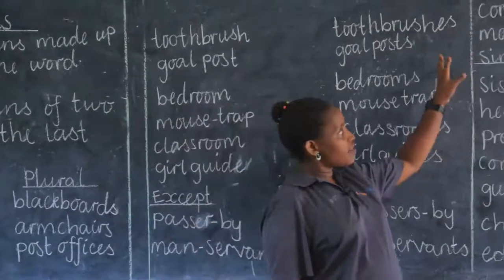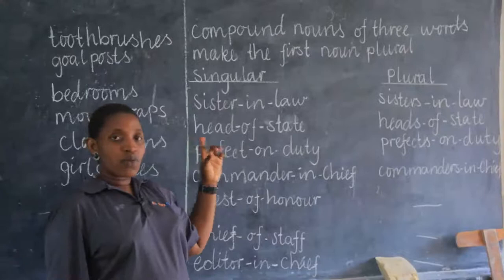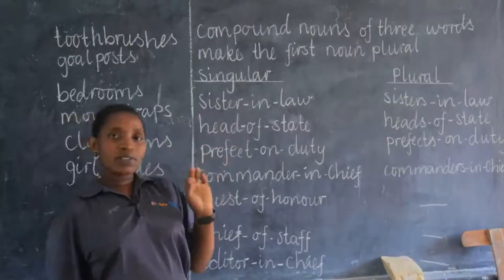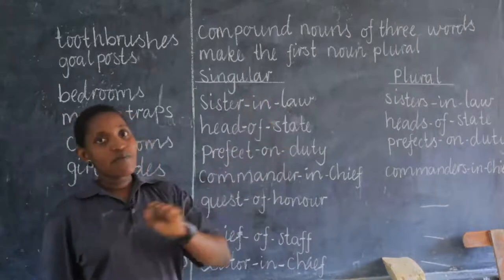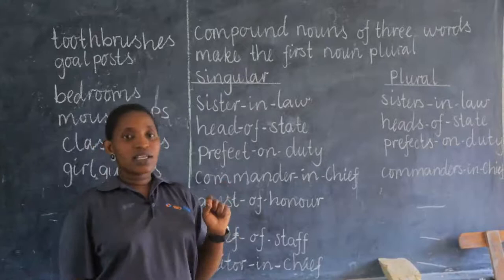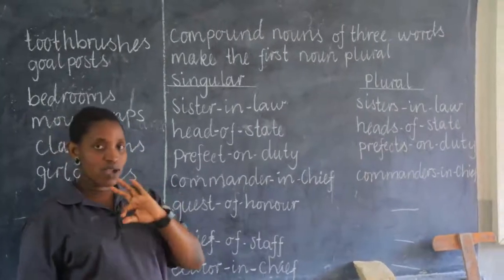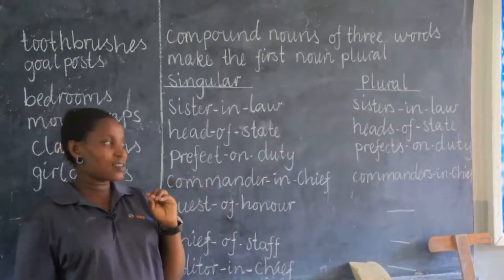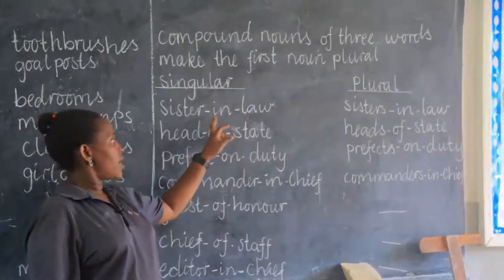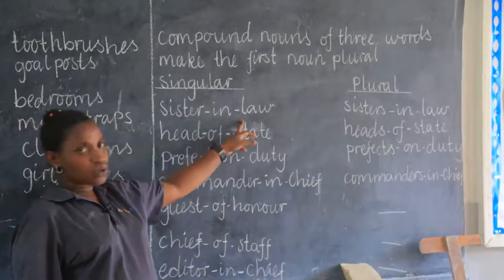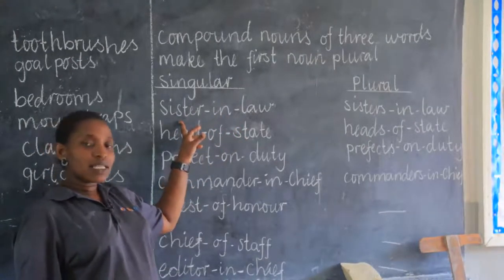Now we have compound nouns of three words. Remember, a compound noun is made up of more than one word. When we are talking about three-word compound nouns, we are going to make the first noun plural. For example, we have sister-in-law. Law is not a noun and in is not a noun, so we make sister plural. We say sisters-in-law.